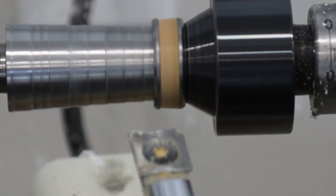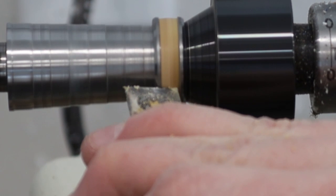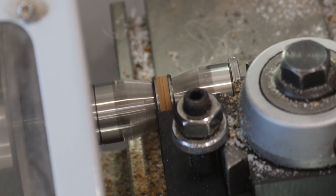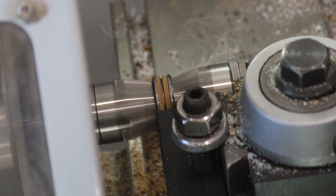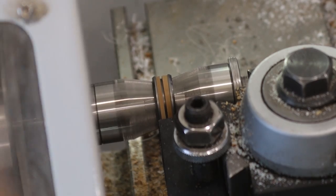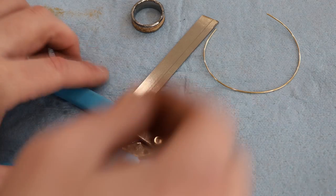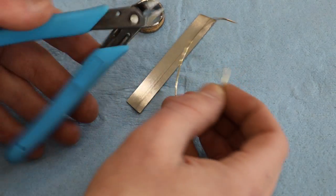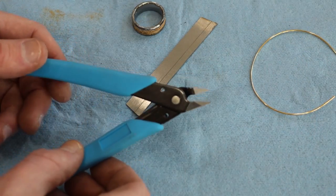Now we're going to make the groove with the metal lathe as well. That's the easiest thing to do if you have one. If not, that's okay, you can do it on the wood lathe as well.